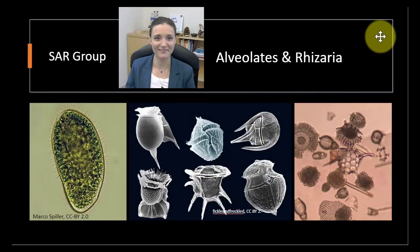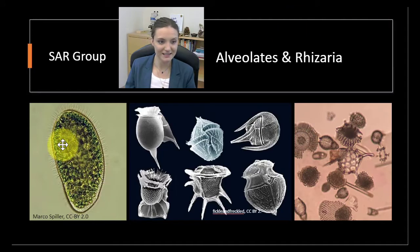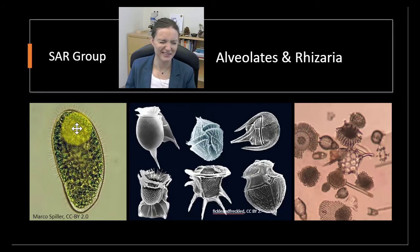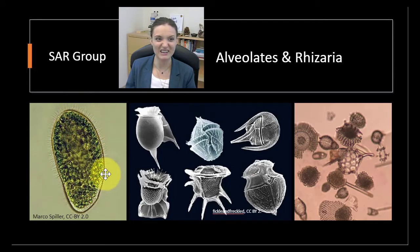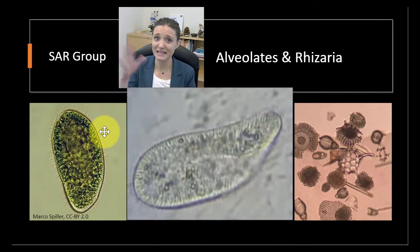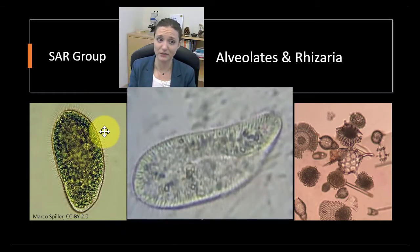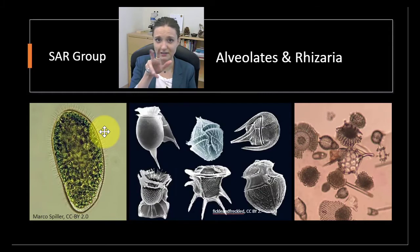Here we have the remaining two groups of SAR: alveolates and rhizaria. Alveolates include paramecium - a general term covering different species. One of their defining characteristics is that they're covered in tiny little hairs called cilia. These cilia are extensions of their plasma membrane that they can beat back and forth or move in unison to move around. They're little tiny critters that zoom around - hopefully we'll see some of these in our samples as well.